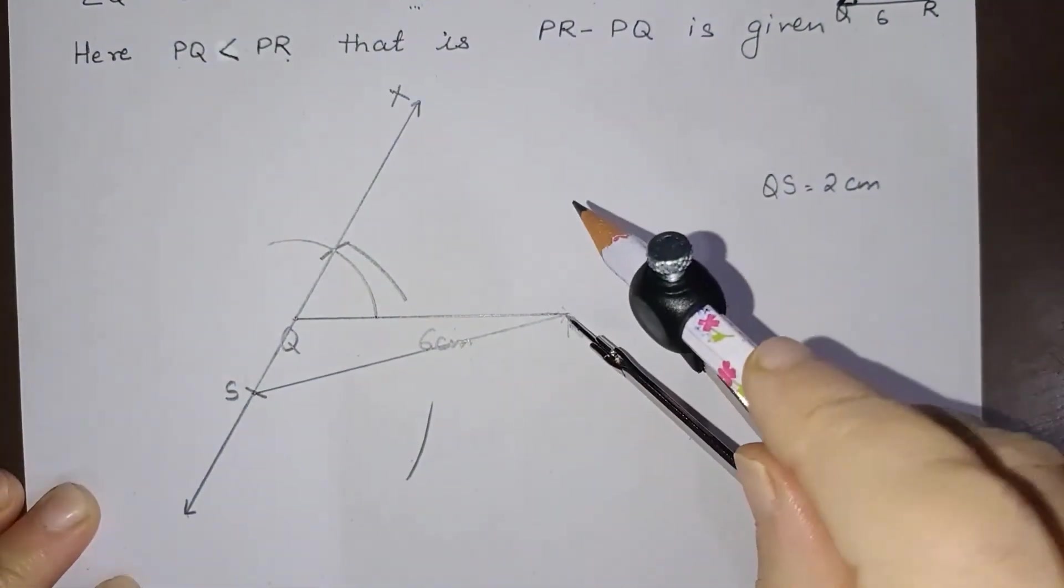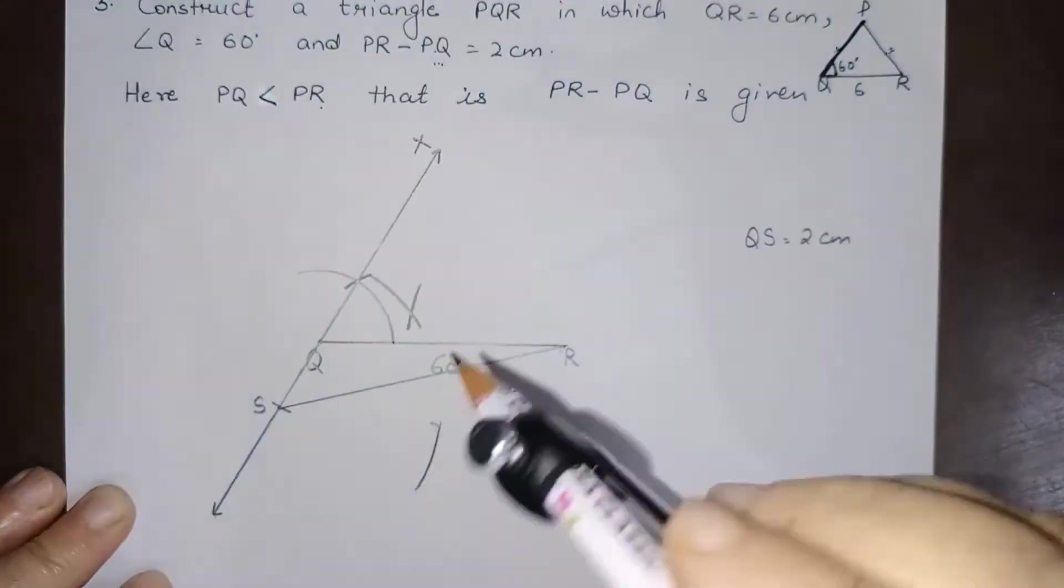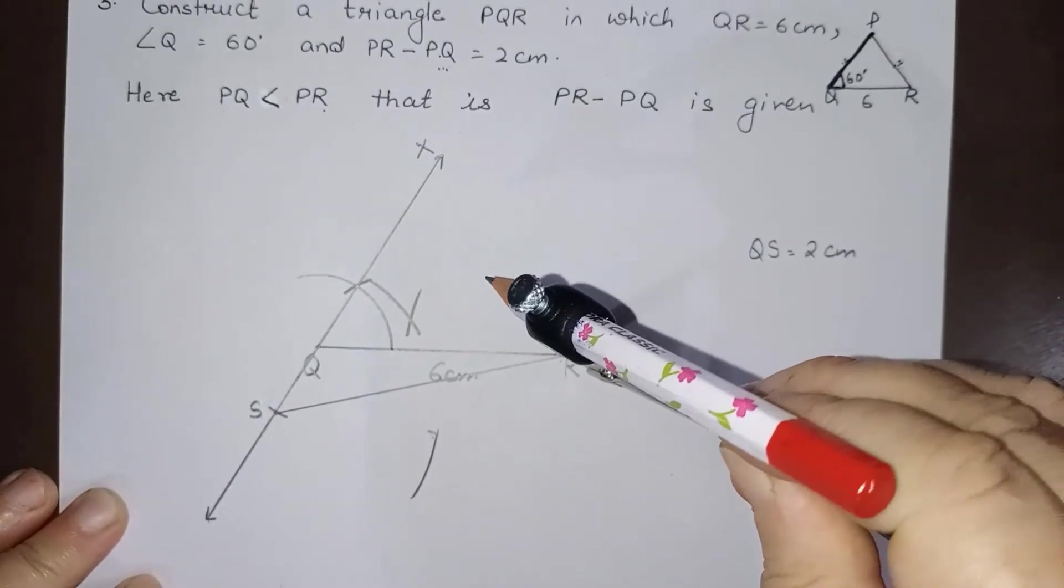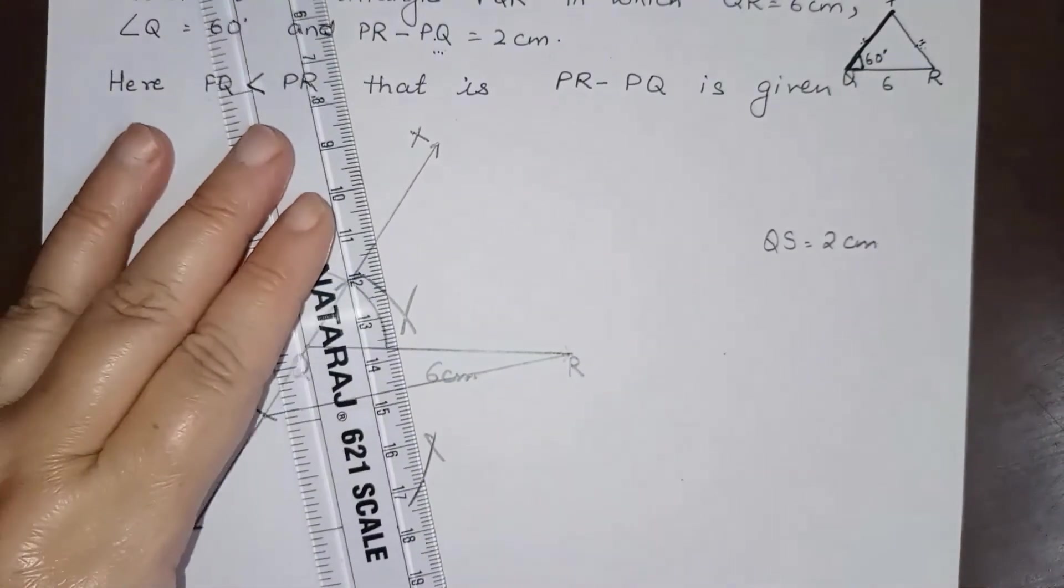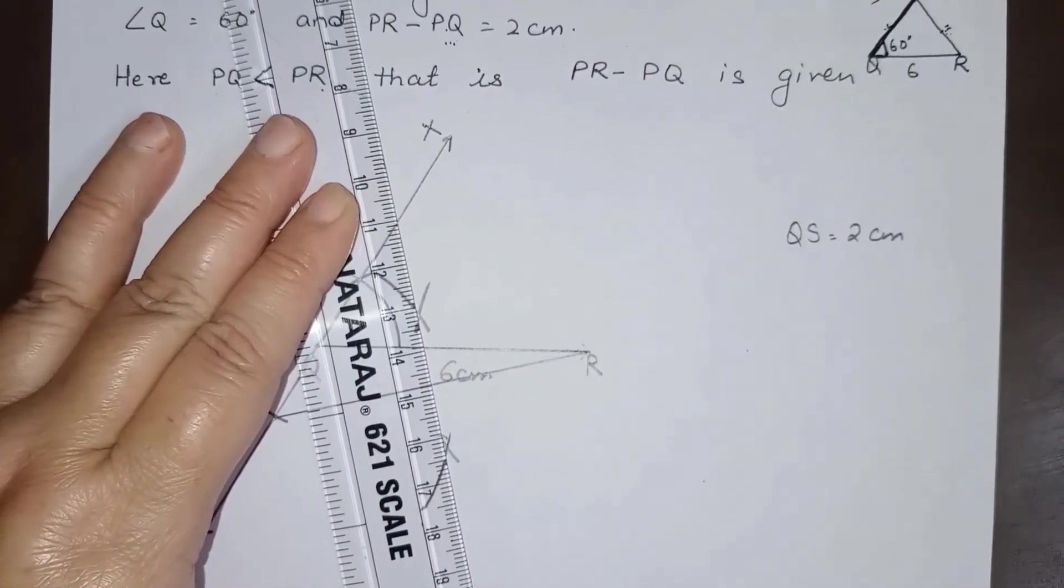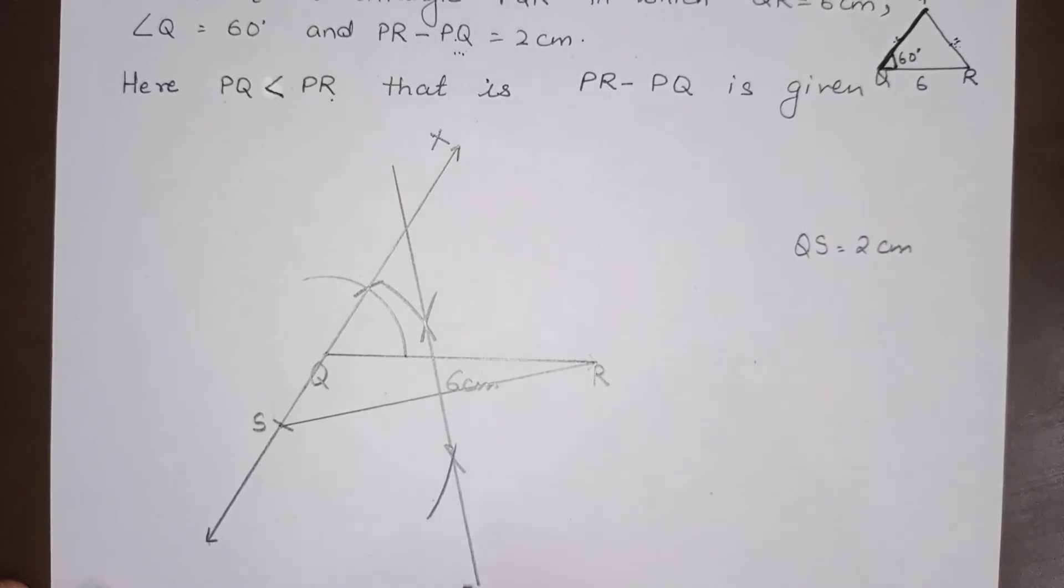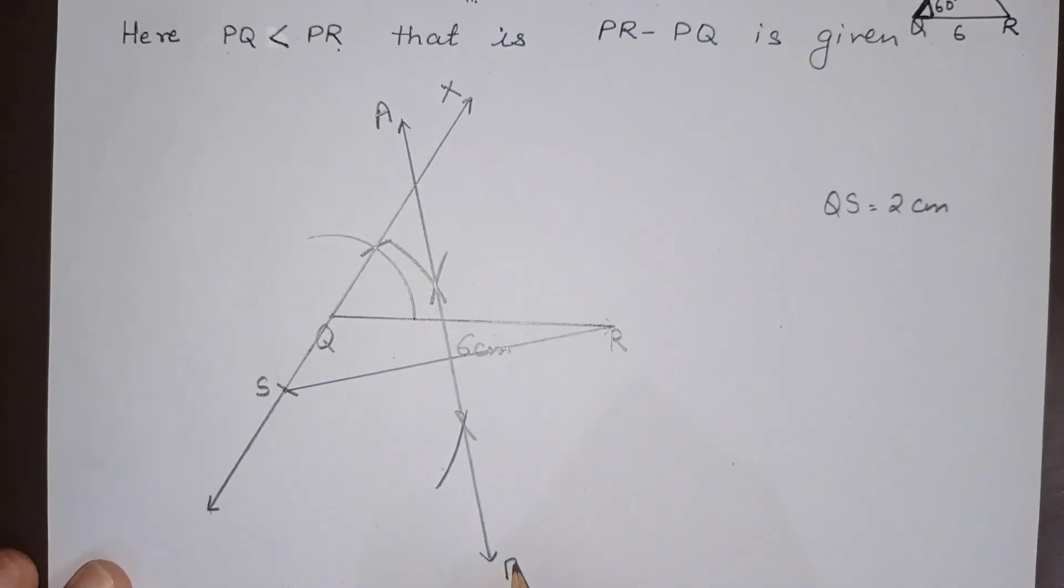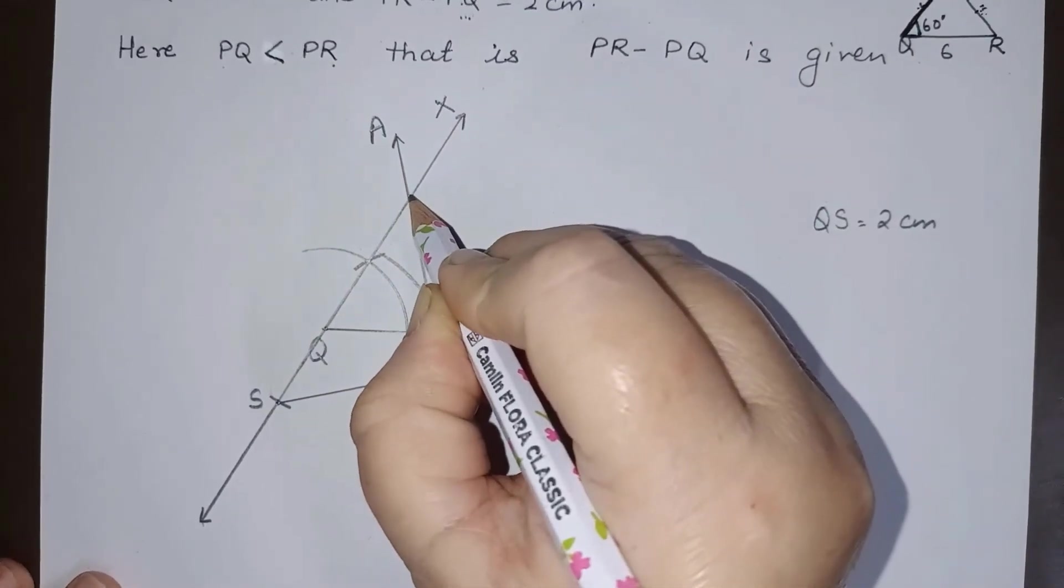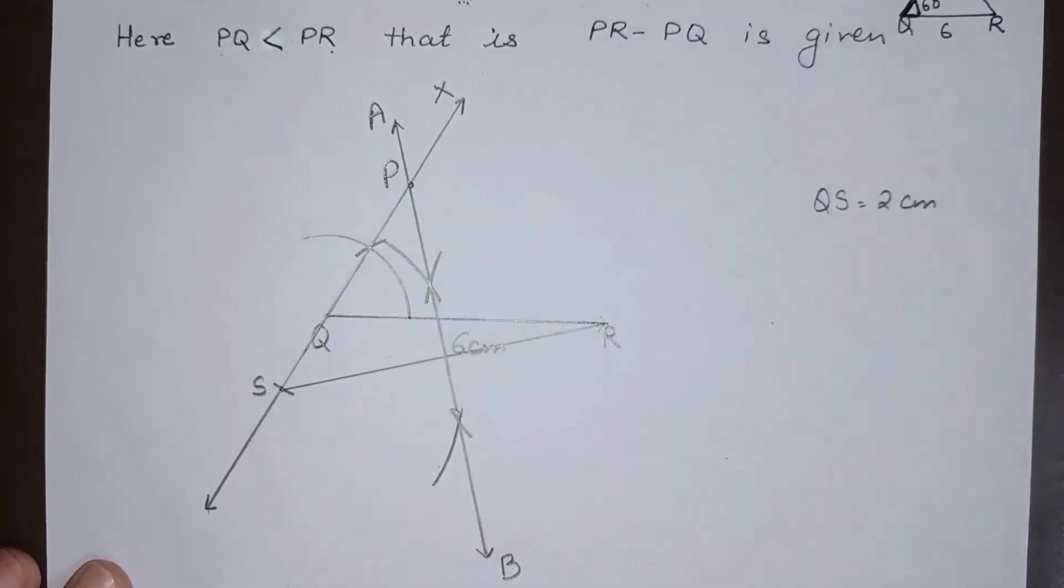From R point. So this is the perpendicular bisector of SR, so like this. And let this perpendicular bisector, let us give it a name, let it be AB. The point where AB is intersecting ray QX, let this point be P.